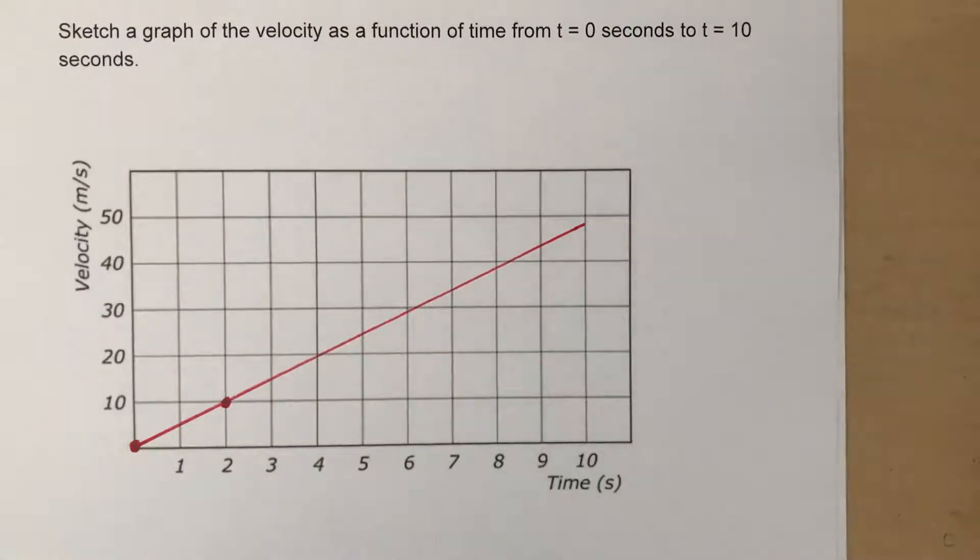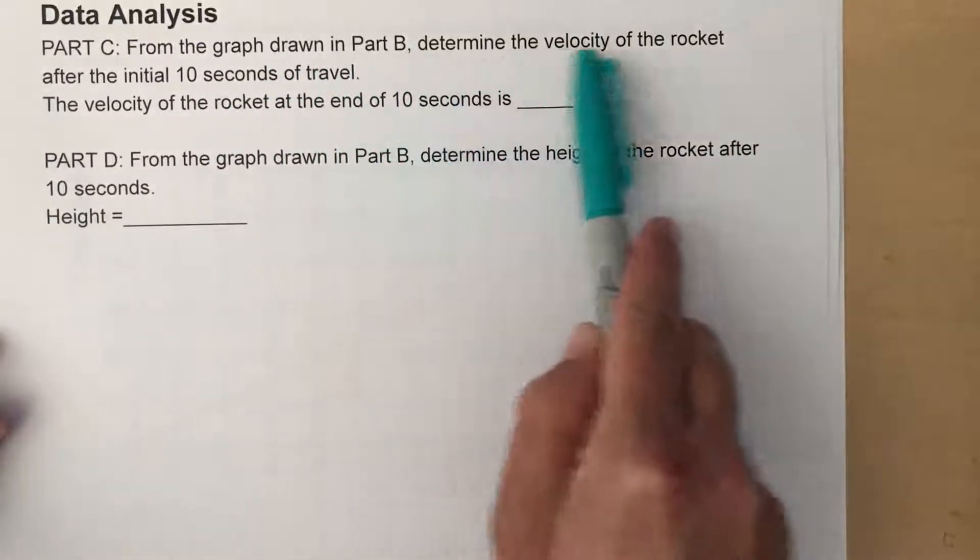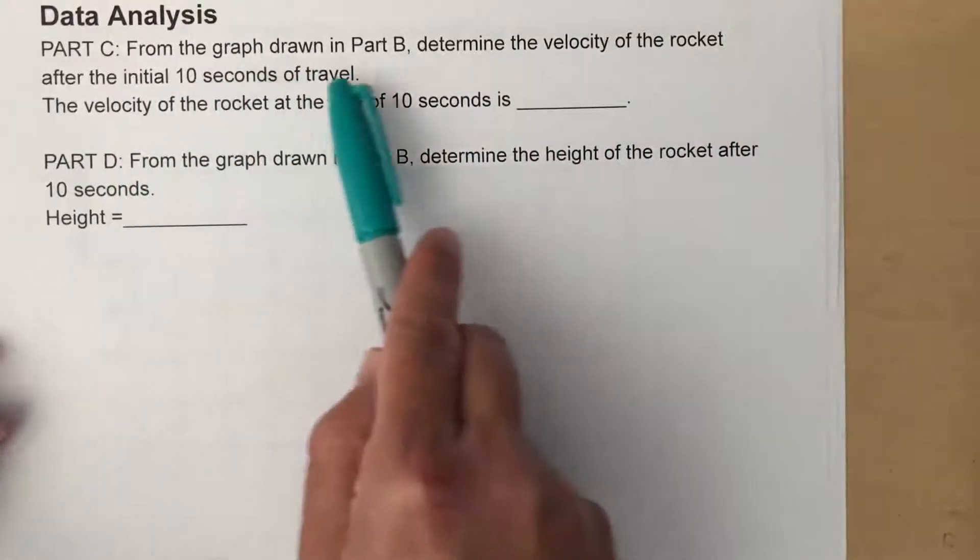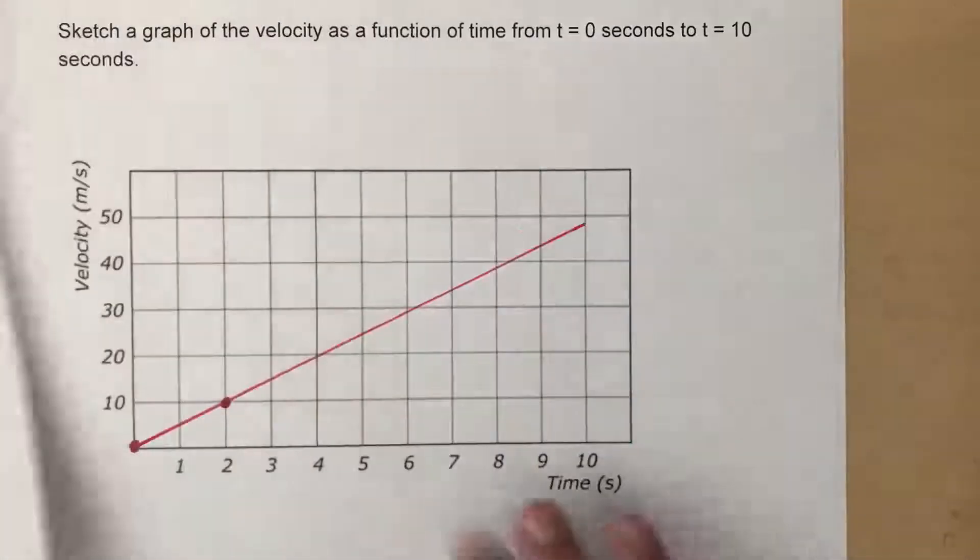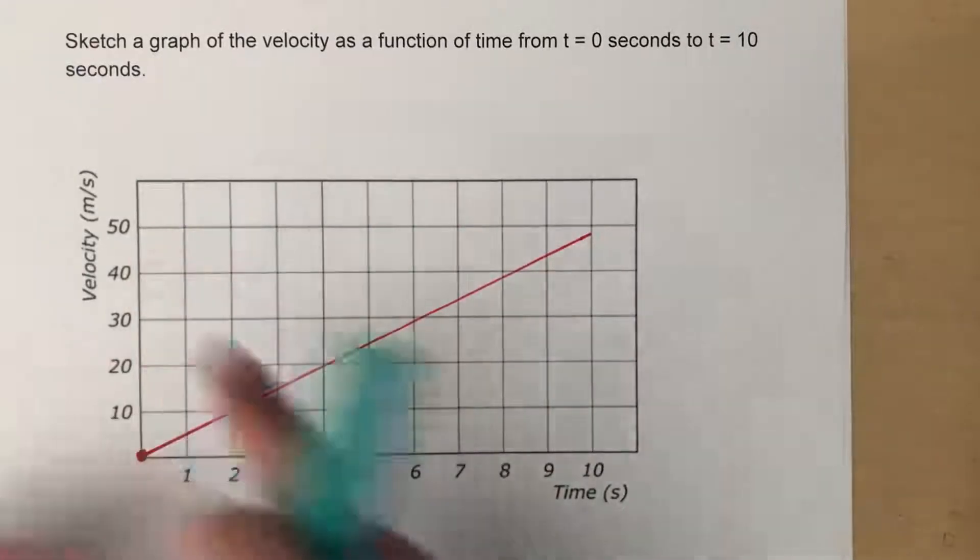Next part, they say in part C, from the graph drawn in part B determine the velocity of the rocket after the initial 10 seconds of travel. We can see that right here that after 10 seconds we've gotten up to a velocity of 50 meters per second.